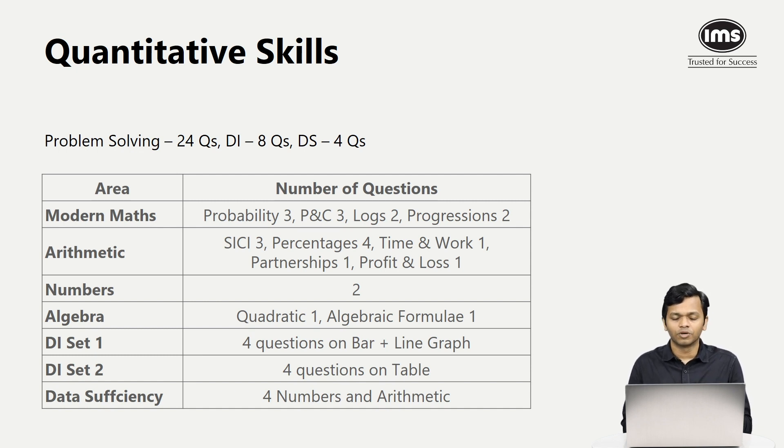In arithmetic, three questions from SICI, four from percentage, one from time and work, partnerships and profit and loss each. From numbers, there were two questions, and from algebra, one question each on quadratic and algebraic formulae.